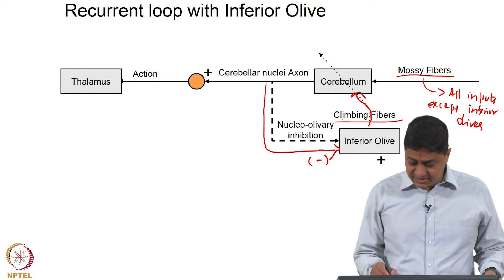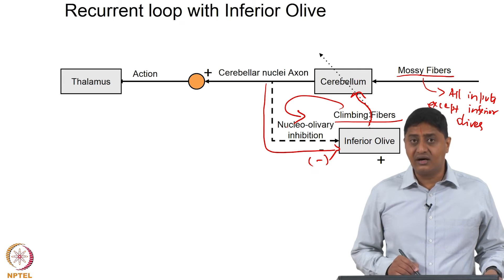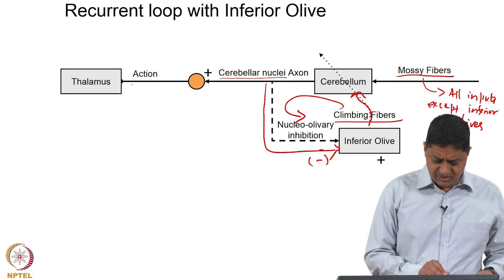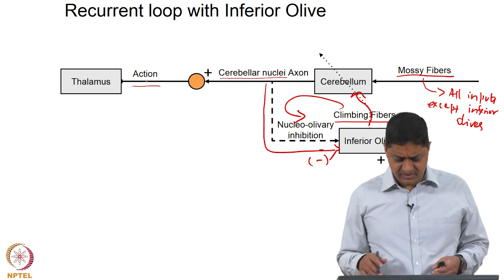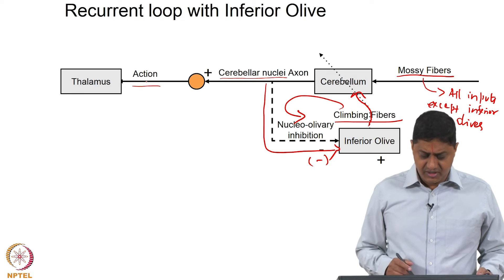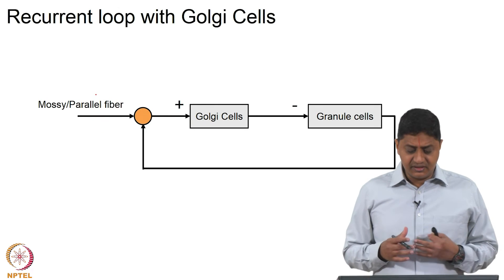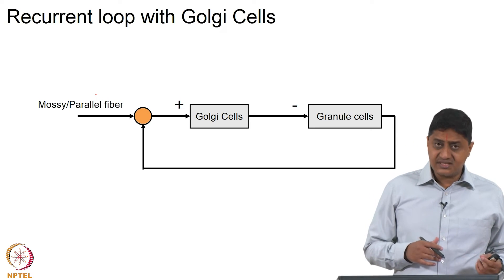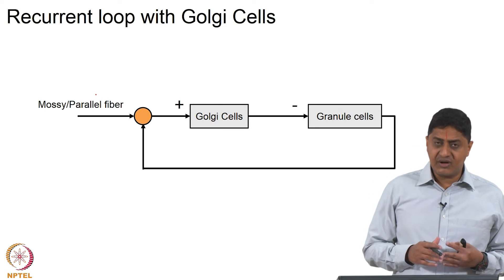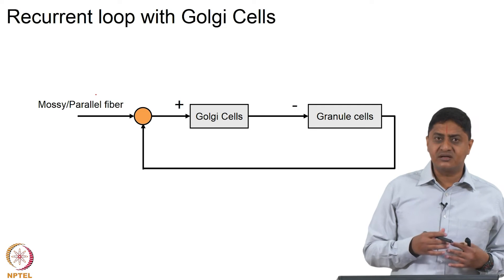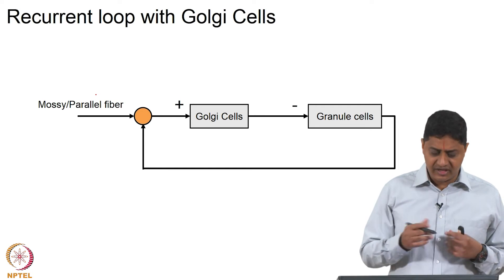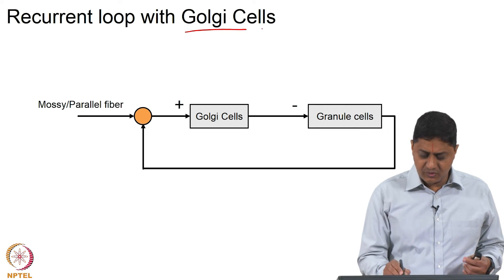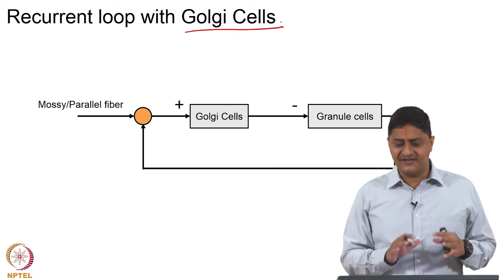This involves another recurrent loop; the output goes via the cerebellar nucleus to thalamus, etcetera. Then the other recurrent loop is somewhat different from the previous loops. Note in the previous two cases the recurrent loops were formed with structures outside the cerebellum: these were cerebral cortex and inferior olive. But this recurrent loop, the third one, with Golgi cells is situated entirely within the cerebellum.